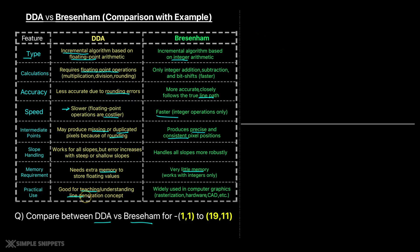For slope handling, DDA works for all slopes but errors increase with steep or shallow slopes. Bresenham generally handles all slopes robustly depending on whether you code for those individual cases. Regarding memory, floating point values require more memory whereas Bresenham requires very little. For practical use, DDA is good for teaching and understanding line generation, while Bresenham is widely used and actually implemented in modern day computer graphics.